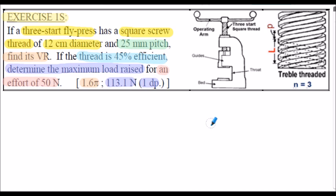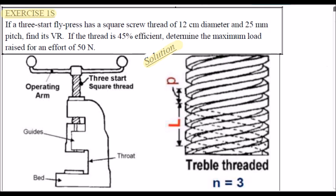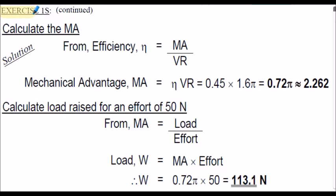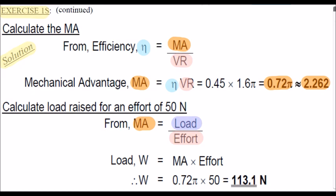Exercise 1S solution. Note this is a 3-start square thread, so the lead — the vertical movement — will be 3 times the pitch of the thread; n equals 3. Using the efficiency formula eta equals MA divided by VR, we can rearrange for MA: that's efficiency multiplied by VR, giving MA equals 0.72 pi or approximately 2.262. Then, since MA equals load divided by effort, we rearrange for load W: W equals MA multiplied by effort, giving W equals 113.1 newtons to one decimal place.